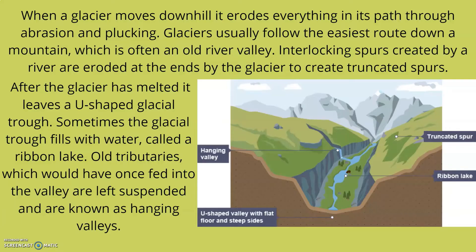When a glacier moves downhill, it erodes everything in its path through abrasion and plucking. Glaciers usually follow the easiest route down a mountain — the path of least resistance — which is often an old river valley. Interlocking spurs created by a river are eroded at the ends by the glacier to create truncated spurs. After the glacier has melted, it leaves a U-shaped glacial trough, which sometimes fills with water to form a ribbon lake. Old tributaries that once fed into the valley are left suspended and are known as hanging valleys.